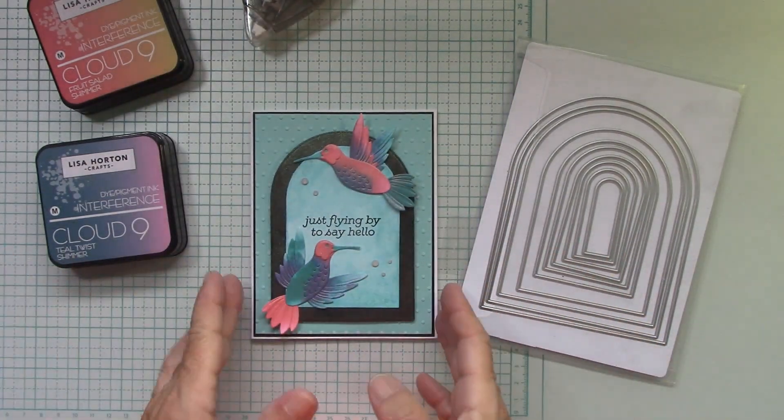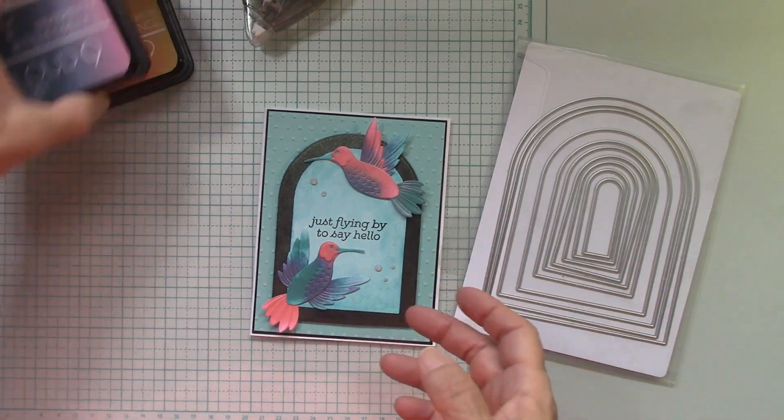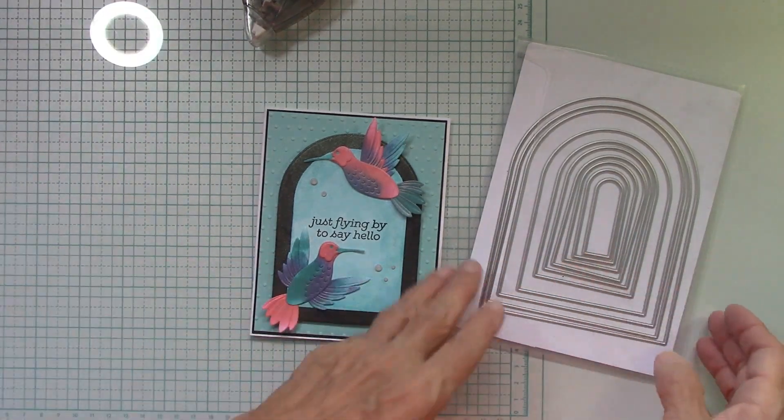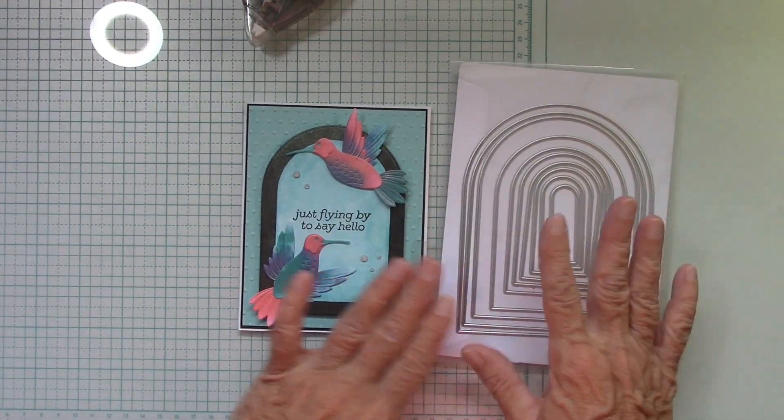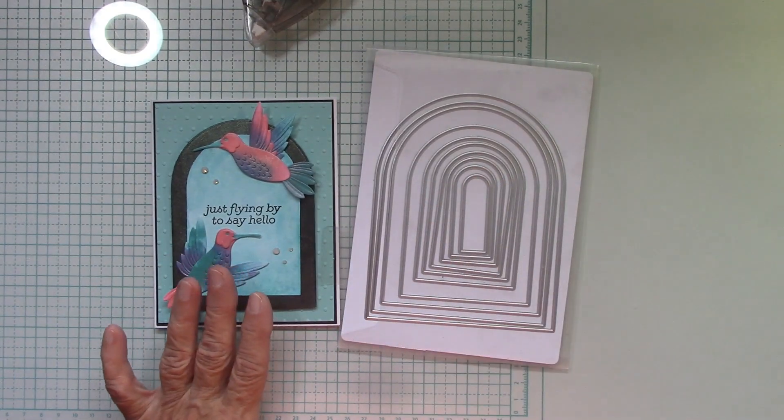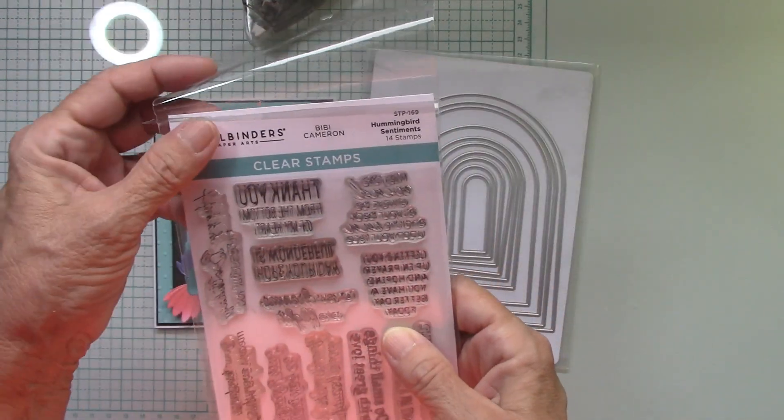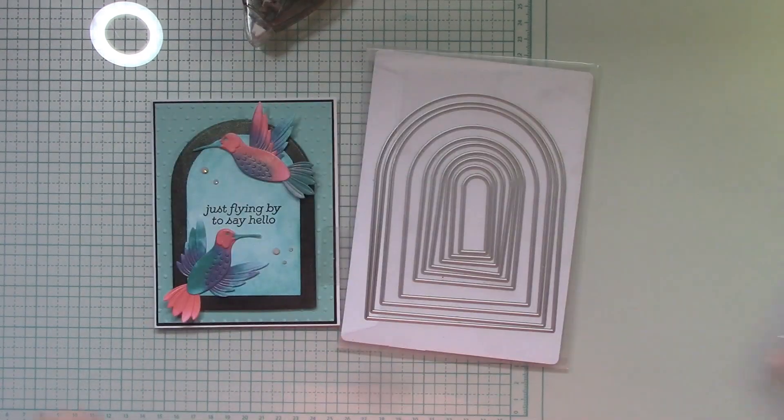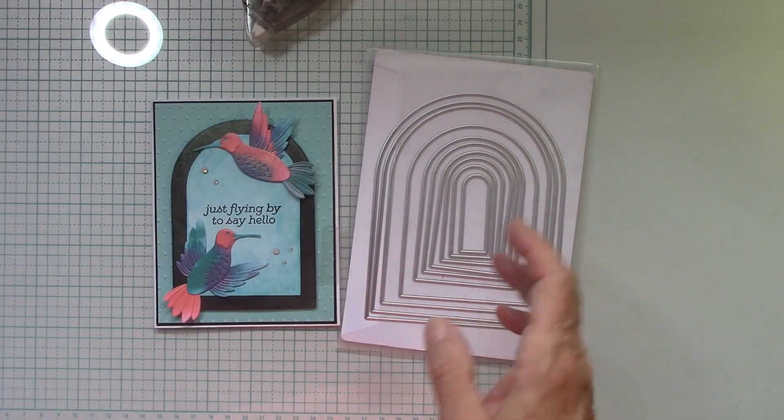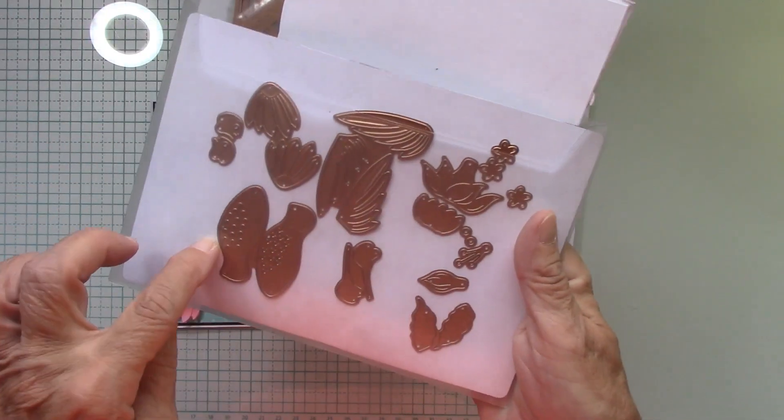So we're going to have fun doing a little embossing and die cutting and inking. We do almost everything here. So I've used the nested dies and again, I'm using BB Cameron's. I love this set, the hummingbird sentiments. I know many of you have it.